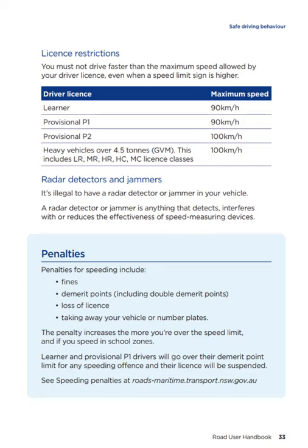Licence restrictions on speed: you must not drive faster than the maximum speed allowed by your driver licence, even when a speed limit sign is higher. For a learner licence holder, the maximum speed is 90 km per hour. For a provisional P1 licence holder, the maximum speed is 90 km per hour. For a provisional P2 licence holder, the maximum speed is 100 km per hour. For heavy vehicles over 4.5 tonne — including LR, MR, HR, HC and MC licence classes — the maximum speed is 100 km per hour.